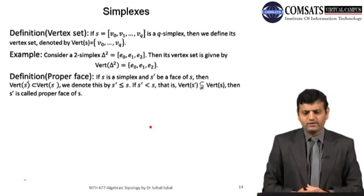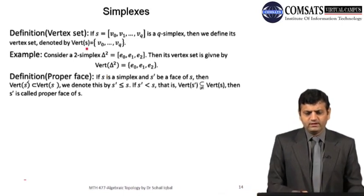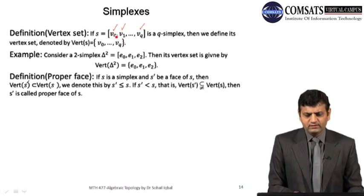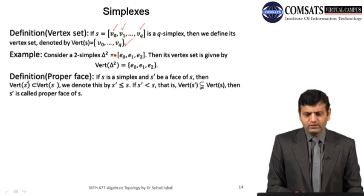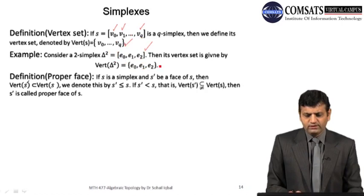Given any q-simplex, its vertex set is {v_0, v_1, …, v_q} — all q+1 vertices of that q-simplex. For example, the vertex set of the two simplex [e_0, e_1, e_2] is {e_0, e_1, e_2}.